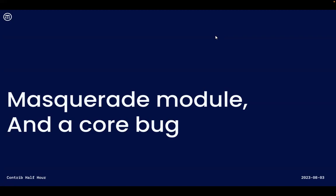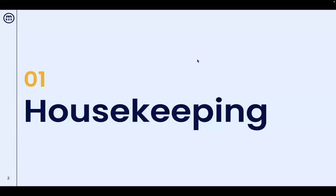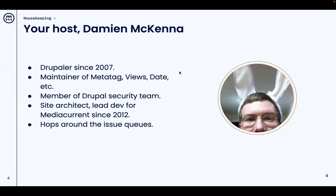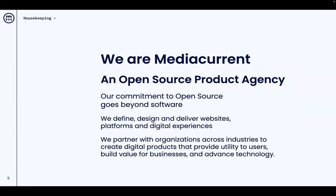Welcome to the MediaCurrent contrib half hour. It's our first meeting of August. Today we're going to take a look at the masquerade module, something that I've done a little hooking up with recently, and we'll take a look at a core bug that you might run into if you use it. My name is Damien McKinnon, I'm your host. I've been involved in the Drupal community since 2007. My time is sponsored by MediaCurrent — we're an open source product agency and our commitment to open source goes beyond software.